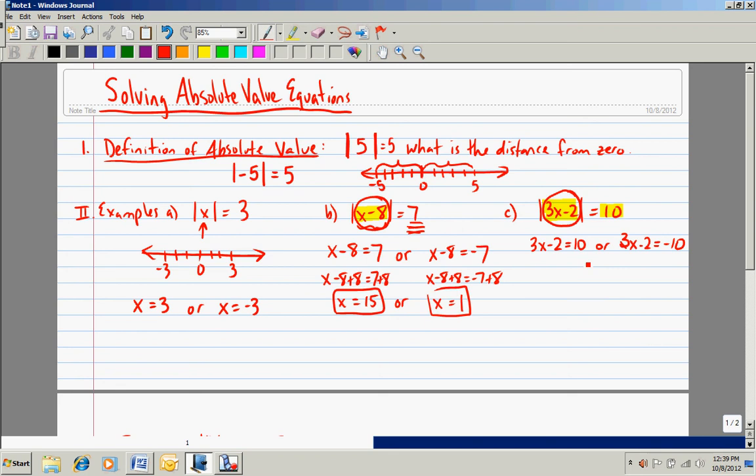In other words, this value could either be positive 10 because the absolute value of 10 is 10, or this value inside the absolute value bars could be negative 10 because the absolute value of negative 10 is also 10.